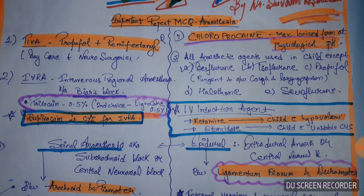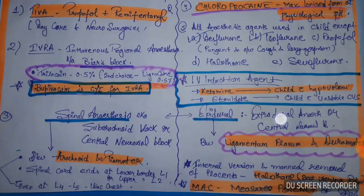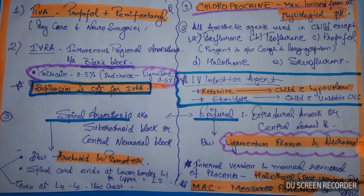IVRA — Intravenous Regional Anesthesia — also known as Bier's Block, is very important. The drug used is prilocaine 0.5%; the second choice is lignocaine 0.5%. A key point to note is that bupivacaine is contraindicated for IVRA.